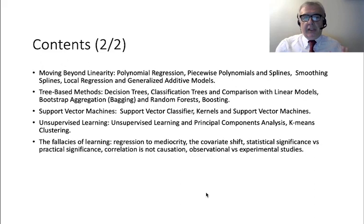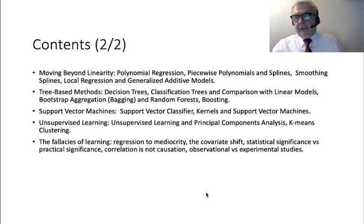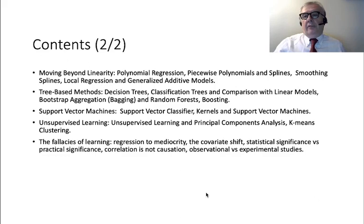Finally, we move beyond linearity through polynomial regression, splines, and generalized additive models. Then we have tree-based methods, support vector machines, and unsupervised learning. The last chapter is my own addition: a chapter on the fallacies of learning, which I think is important because as a data scientist there are powerful methods but it's easy to become a victim of fallacies — better for you to know them.